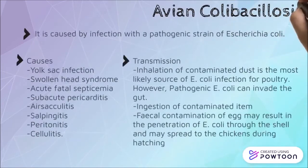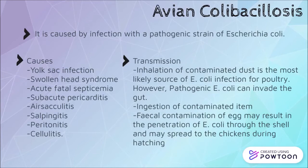Avian colibacillosis is caused by infection with a pathogenic strain of Escherichia coli. It can cause yolk sac infection, swollen head syndrome, and avian cellulitis in poultry animals. It can be transmitted by inhaling contaminated dust or ingestion of contaminated items.